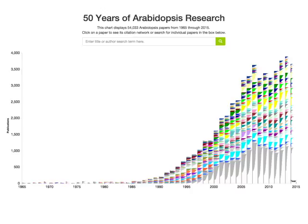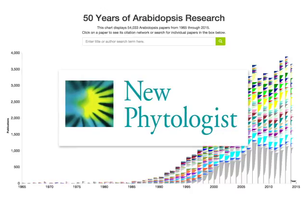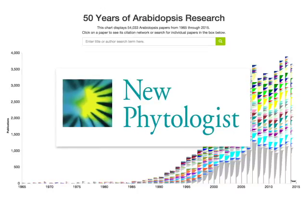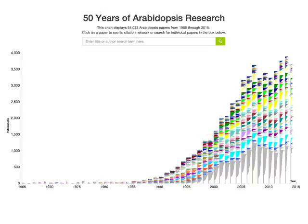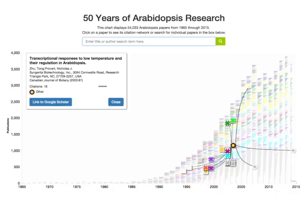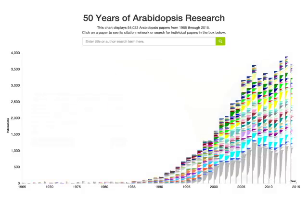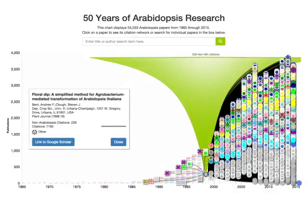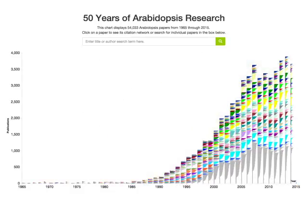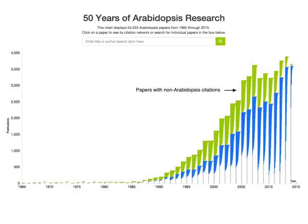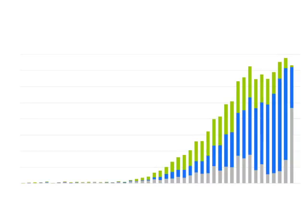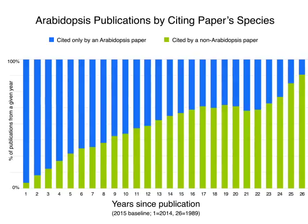As part of a review of these past 50 years for the New Phytologist, we have built an interactive explorer of the Arabidopsis literature. Some papers have been cited a few times and some many times. The most highly cited paper is the Clough and Bent 1998 floral dip method. A third of the papers have been cited by non-Arabidopsis researchers, represented by the green bars here. The yearly impact outside of Arabidopsis research increases for older papers, meaning Arabidopsis is having a huge impact in plant biology.